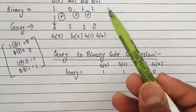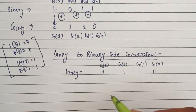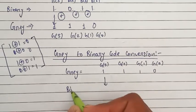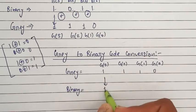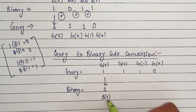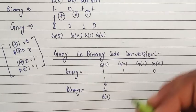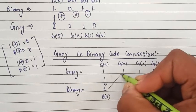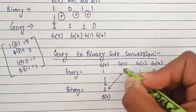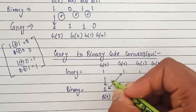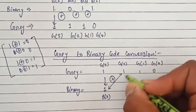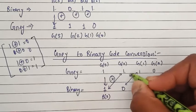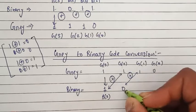For the first value of binary, b3, the value will be exactly the same as g3. For the second bit, b2, you have to do XOR of b3 and g2. Both values are the same, so the answer is 0.